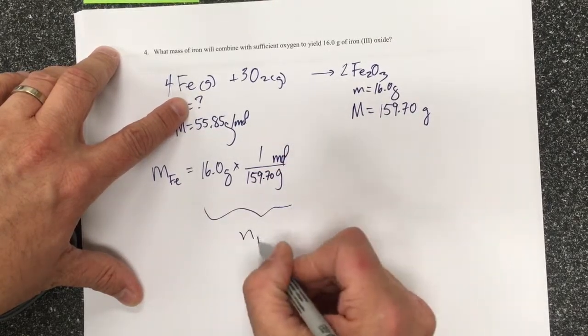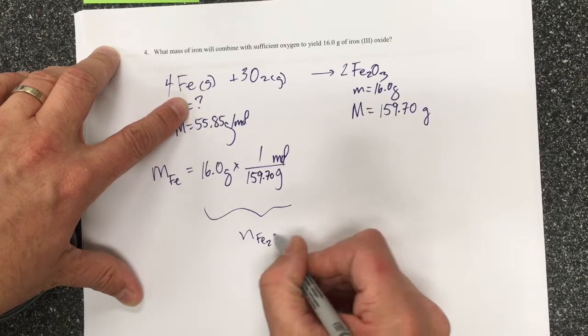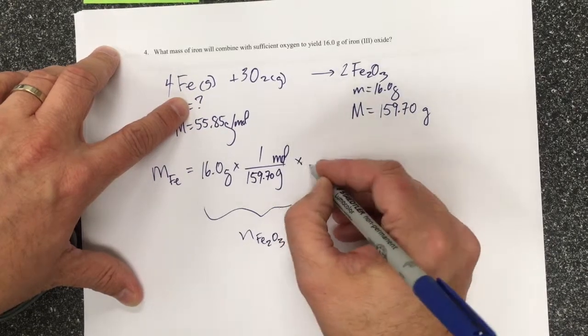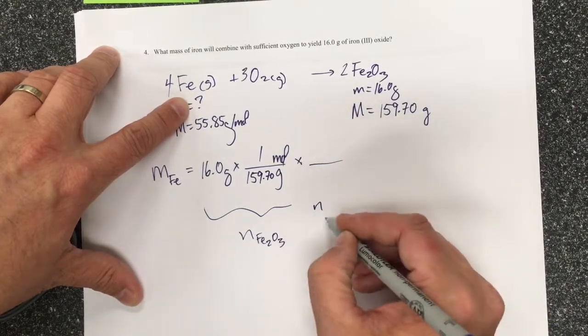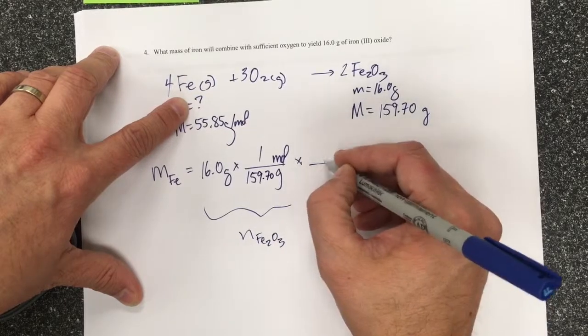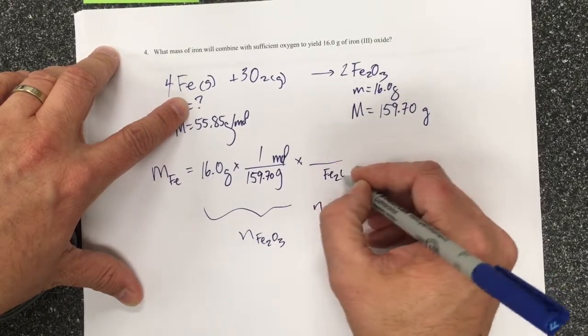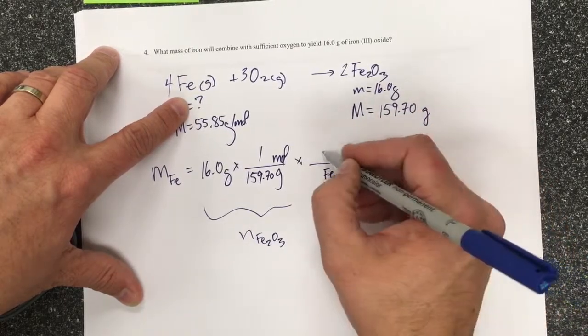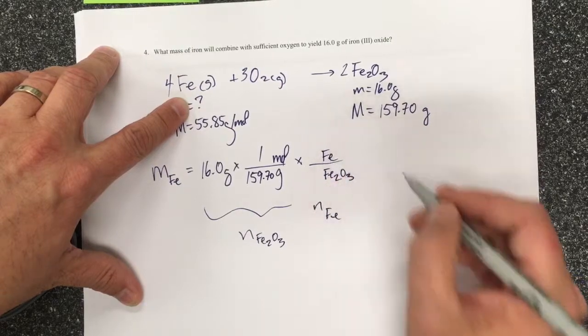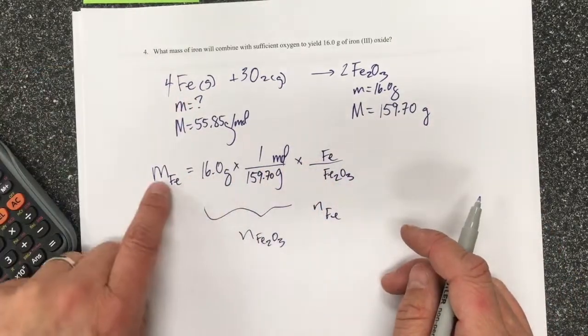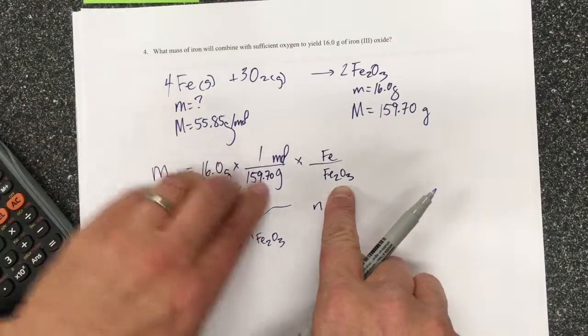So this is to find the N of the Fe2O3, iron 3 oxide, and then I'm going to find the N of Fe. And so I put Fe2O3, iron 3 oxide, in the denominator and iron in the numerator because I want to find iron and I had this to start off with.